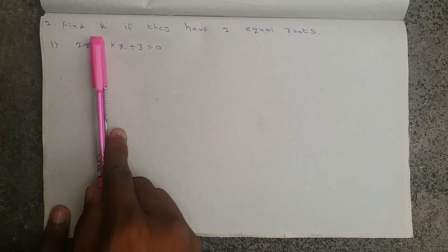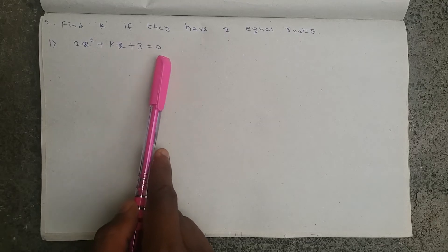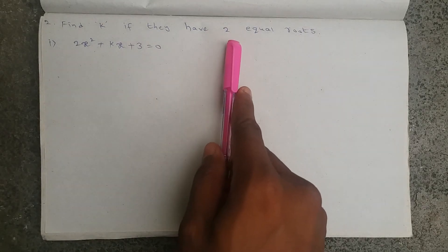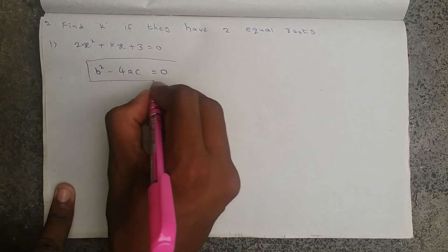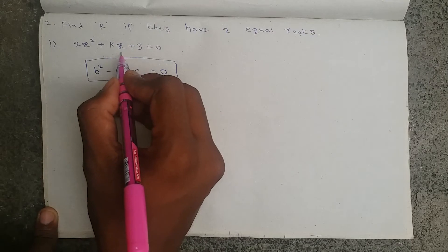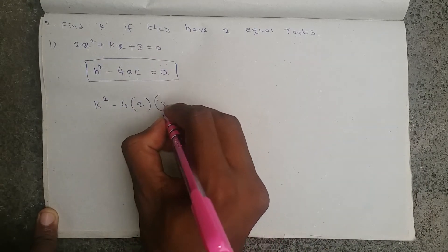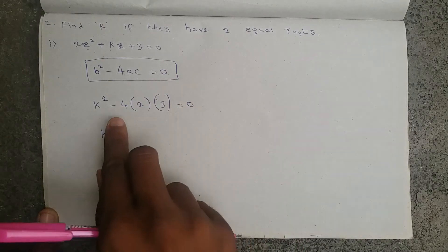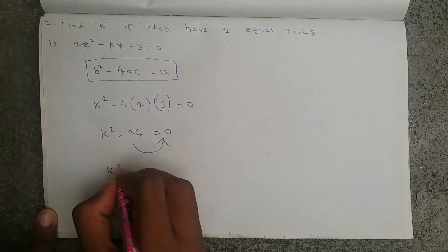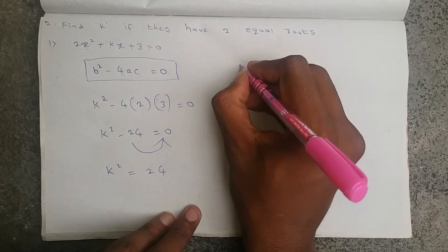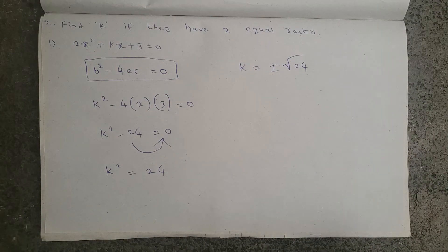The next bit: find k if the equation 2x² + kx + 3 = 0 has two equal roots. The condition for two equal roots is b² - 4ac = 0. Here b is k, so k² - 4 into 2 into 3 = 0. That gives k² - 24 = 0, so k² = 24. Therefore k equals plus or minus √24.